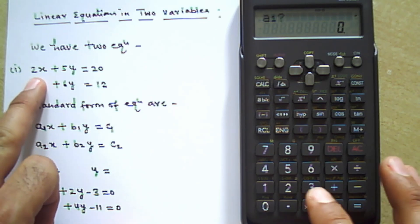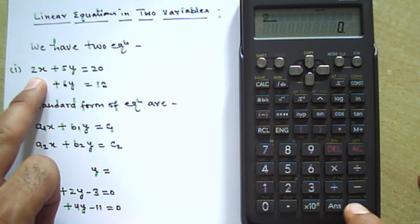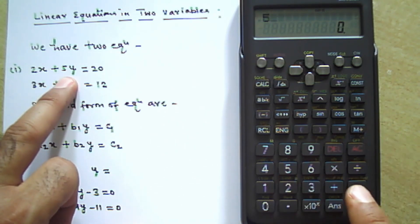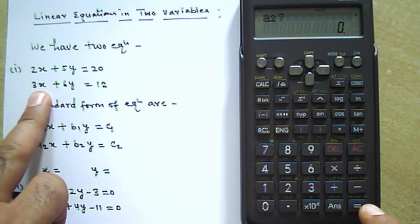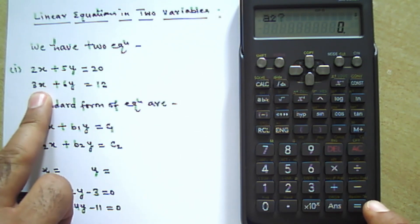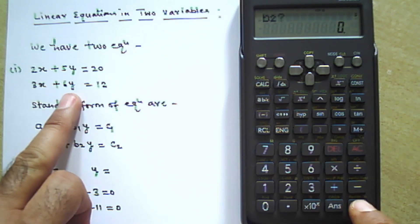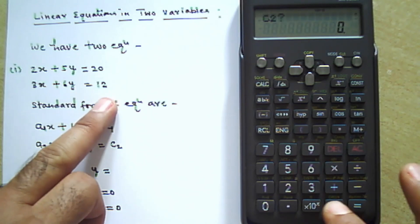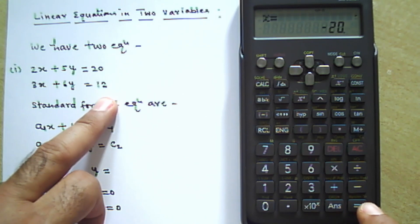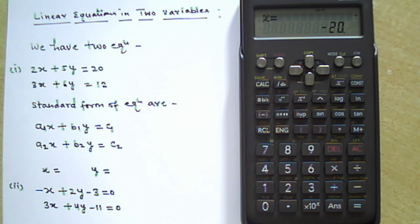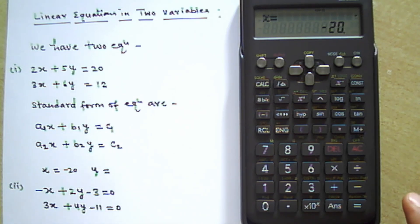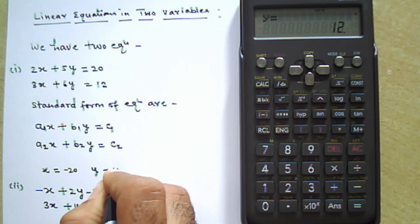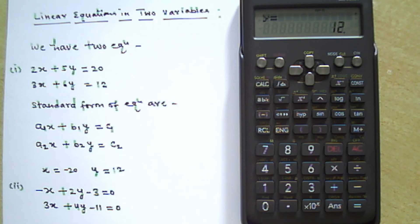Now the calculator is asking for values. The first value is a1, which is 2 — press equal. Next is b1, that is 5 — press equal. Next is c1, that is 20 — press equal. Then a2 is 3, b2 is 6, and c2 is 12. The first variable x has a value of minus 20. Press equal again and you get the second value: y equals 12.